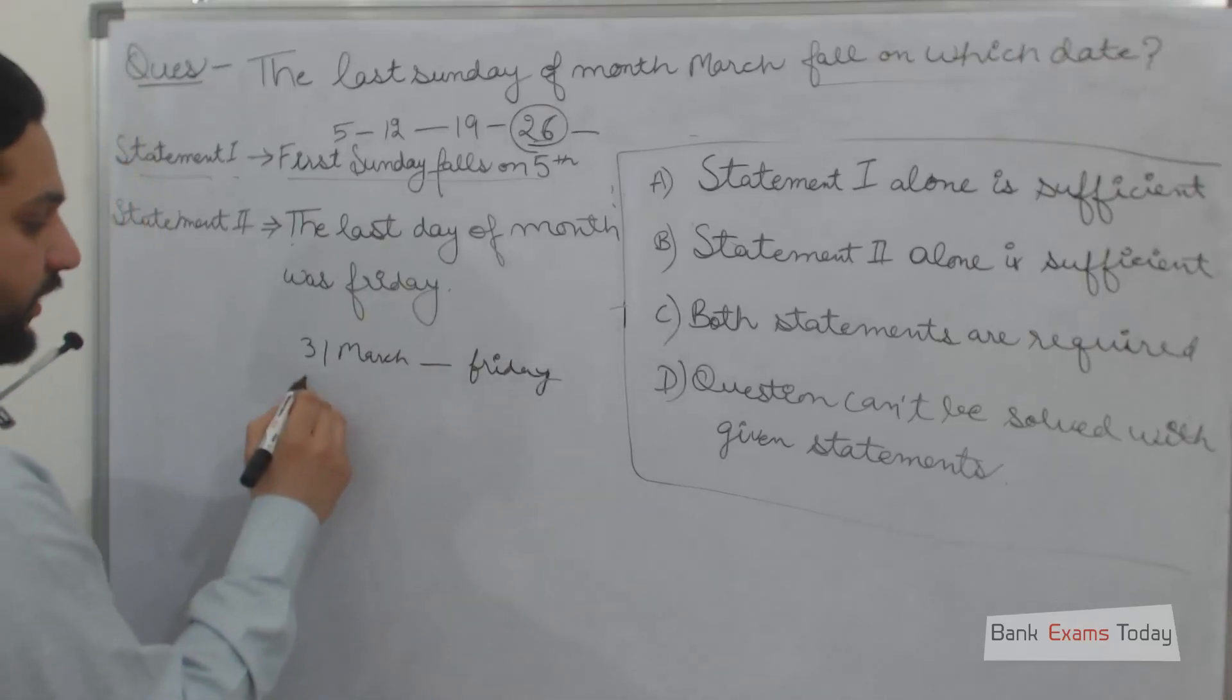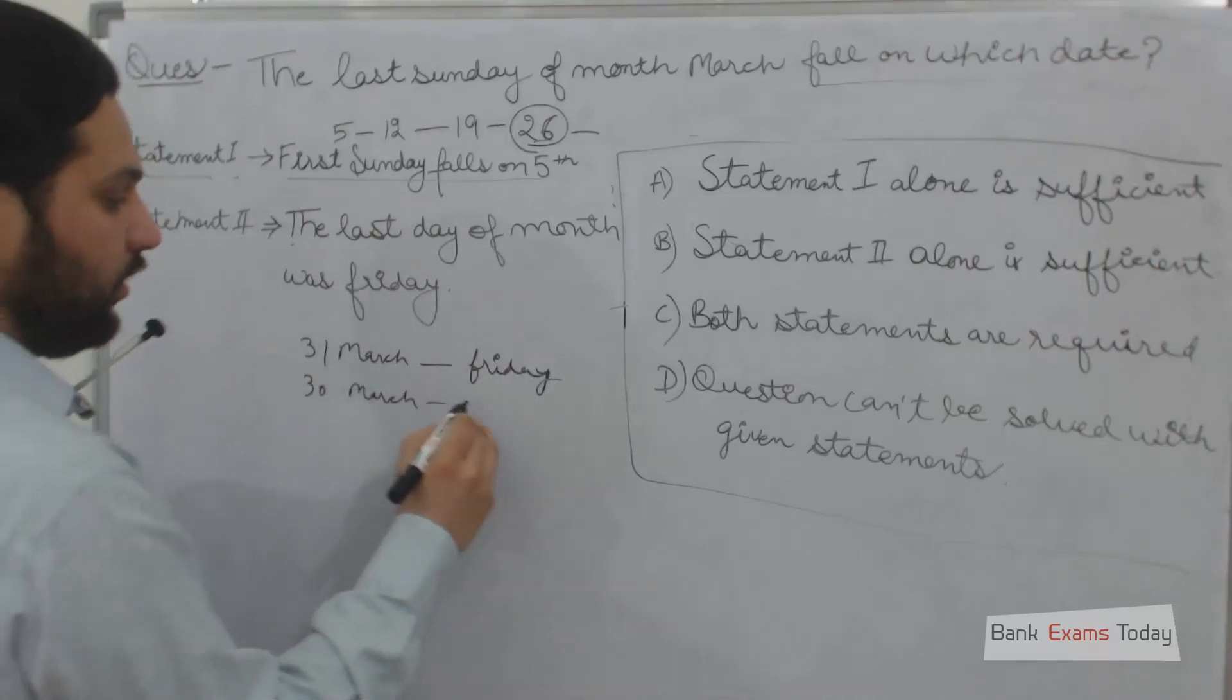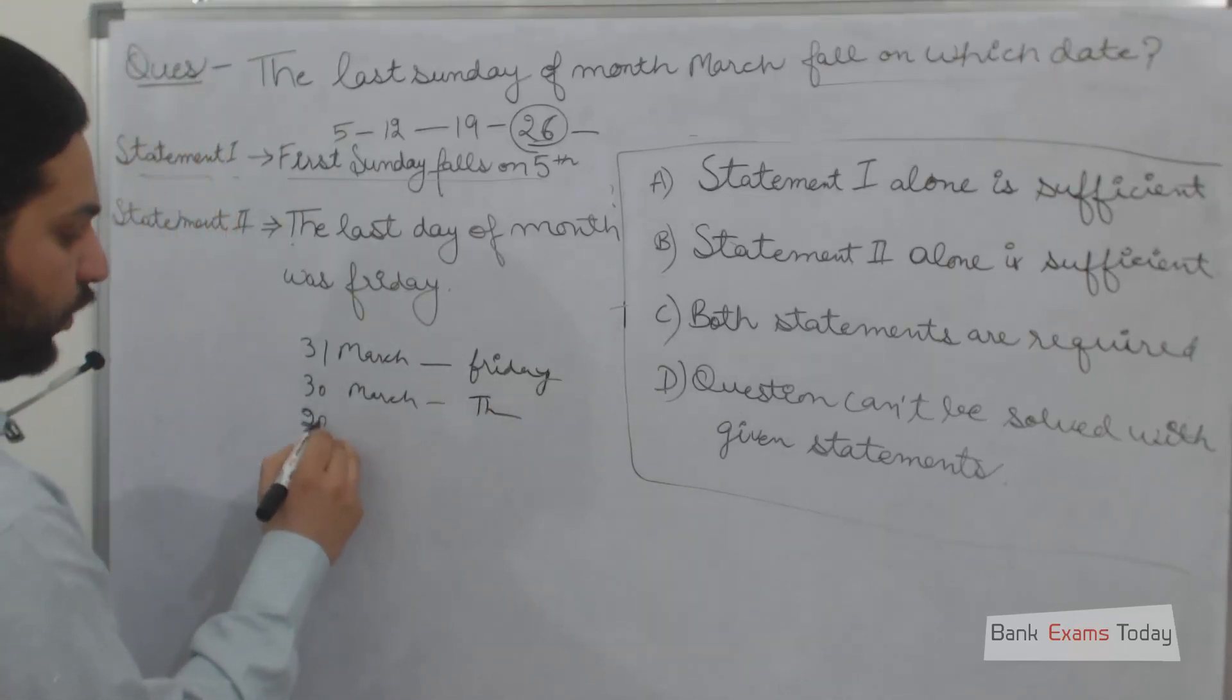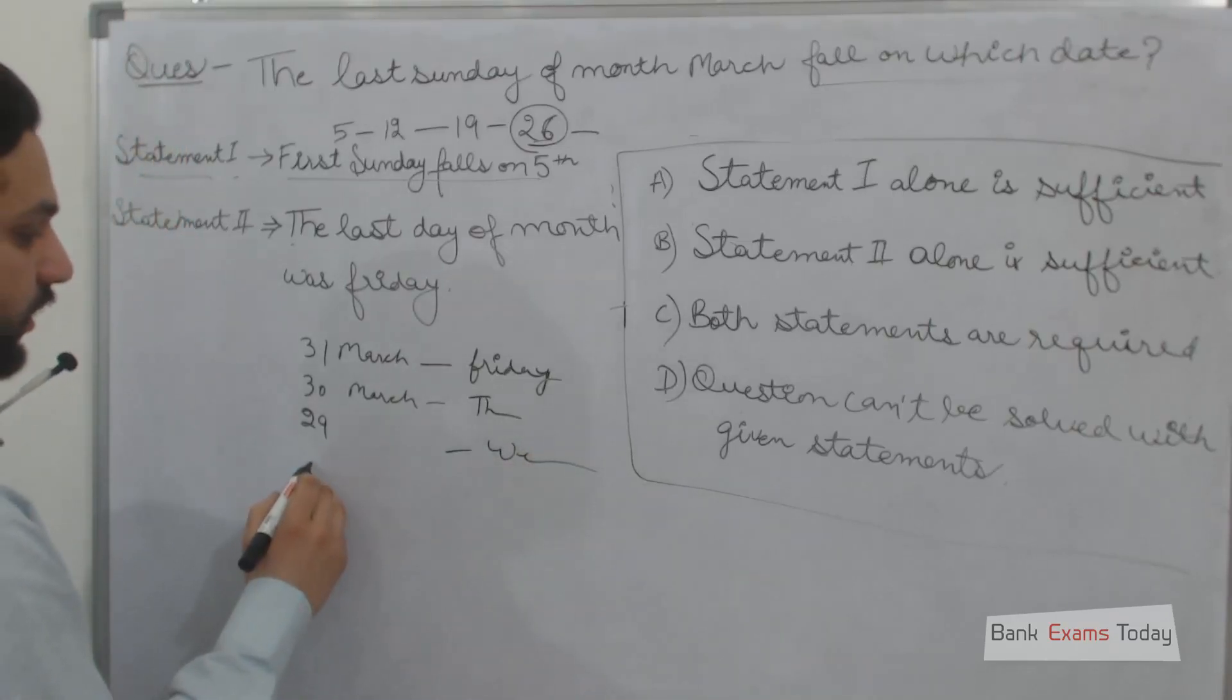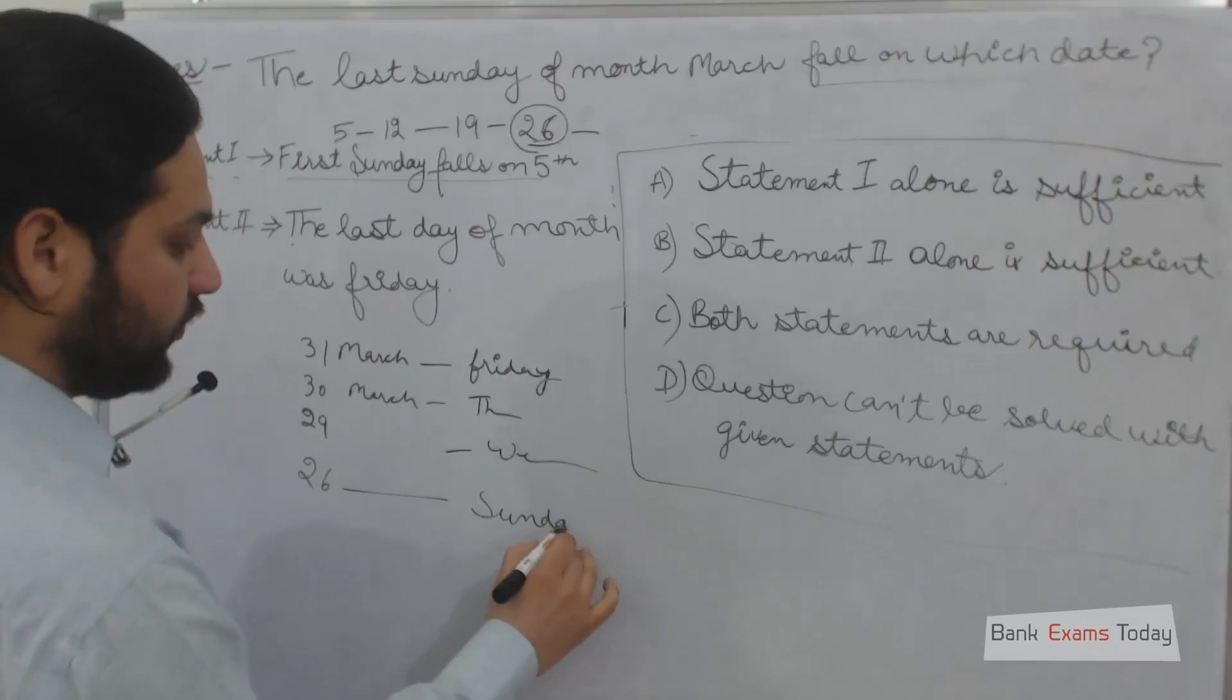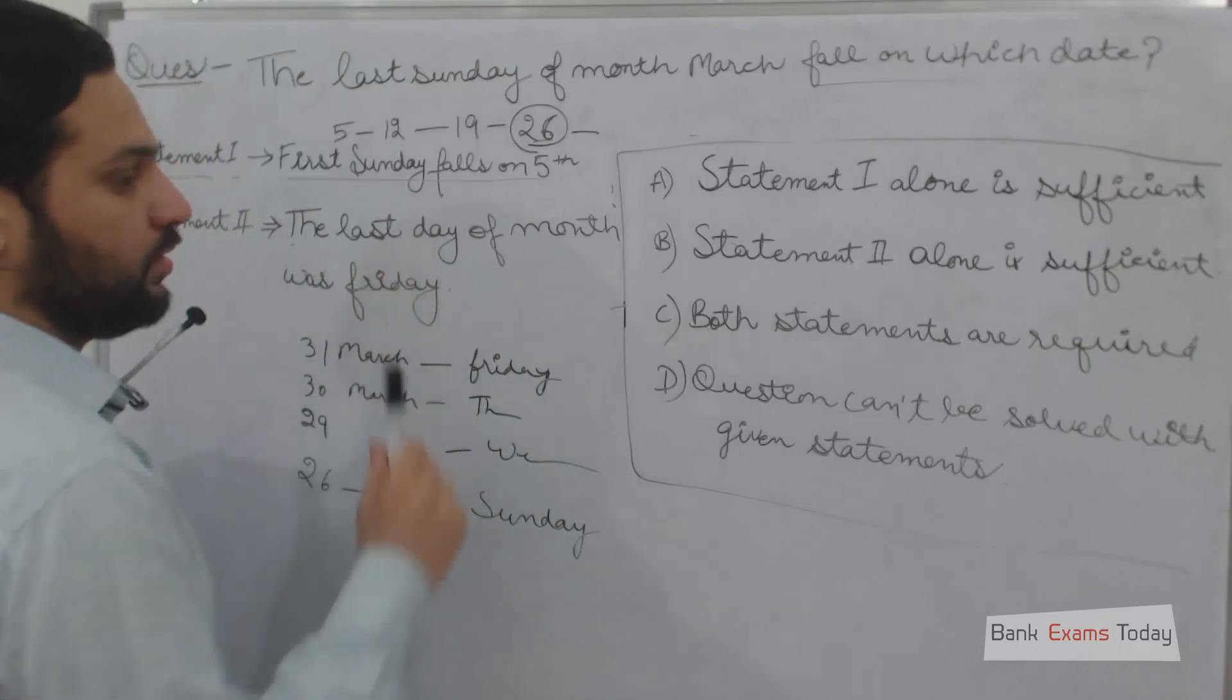From here we can calculate: 30th March was Thursday, 29th was Wednesday, and working backwards, 26th was Sunday. We can answer the question using this statement as well.